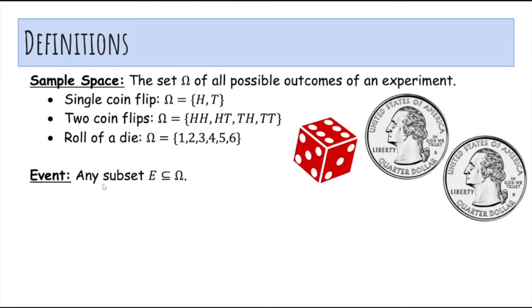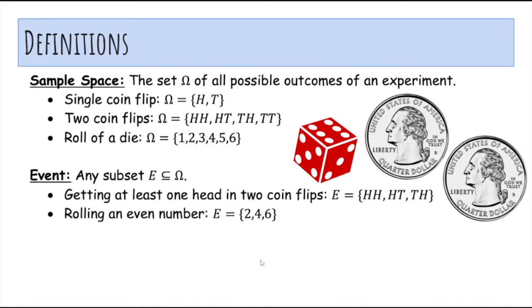An event is any subset of the sample space. For example, getting at least one head in two coin flips, so this event includes these three outcomes. Or rolling an even number on a die, so this event includes the outcomes 2, 4, 6.